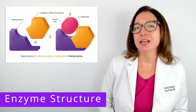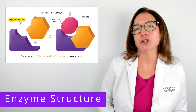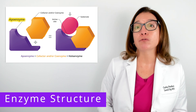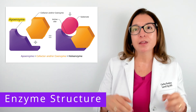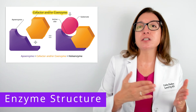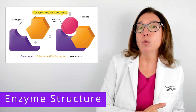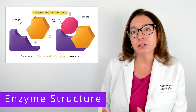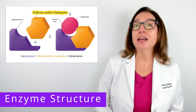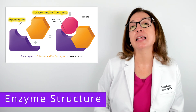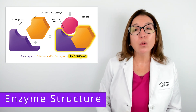Let's now review the structure of an enzyme. The apoenzyme is the inactive protein portion of the enzyme. In order for it to become activated, it requires binding of a helper molecule. Helper molecules include cofactors and coenzymes. A cofactor is an inorganic ion, whereas coenzymes are organic molecules such as ATP and vitamins. Once the cofactor and/or coenzyme binds to the apoenzyme, a holoenzyme is formed, which is a whole active enzyme.